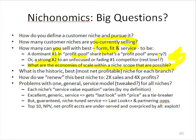Every branch that's making money or has critical mass of volume has, hiding inside that activity, one historic best and most net-profitable niche. We have to figure out what that is so we can get down to it, clean it up, and do it a lot better. If we can renew it, fine-tune the service value equation, fine-tune fill rates, and focus on the 555, that's how we double sales and quadruple profits in that niche. That's our first order of business.